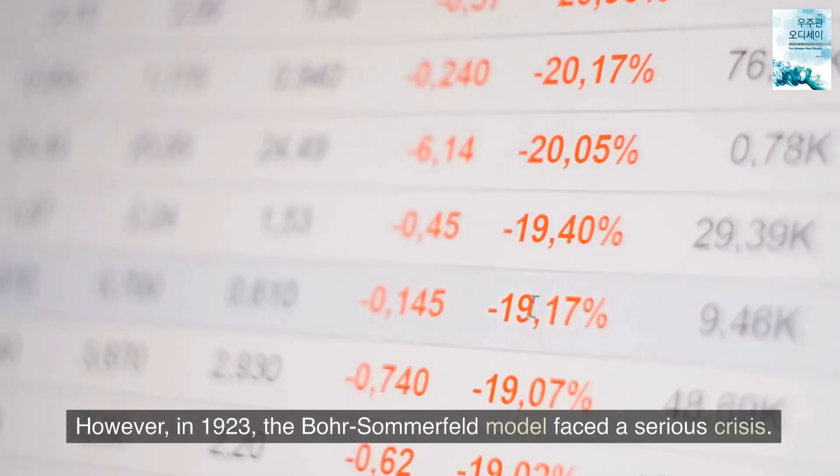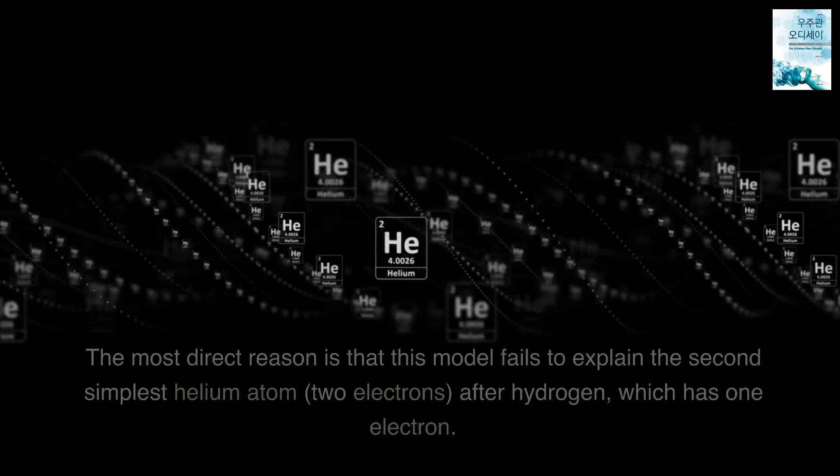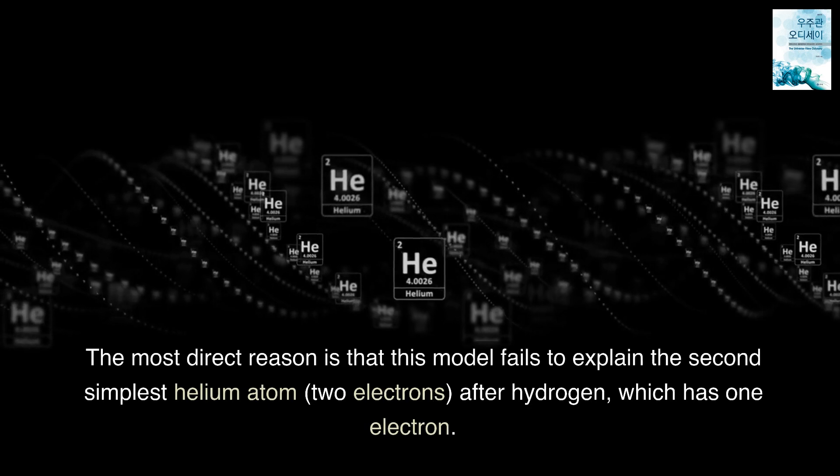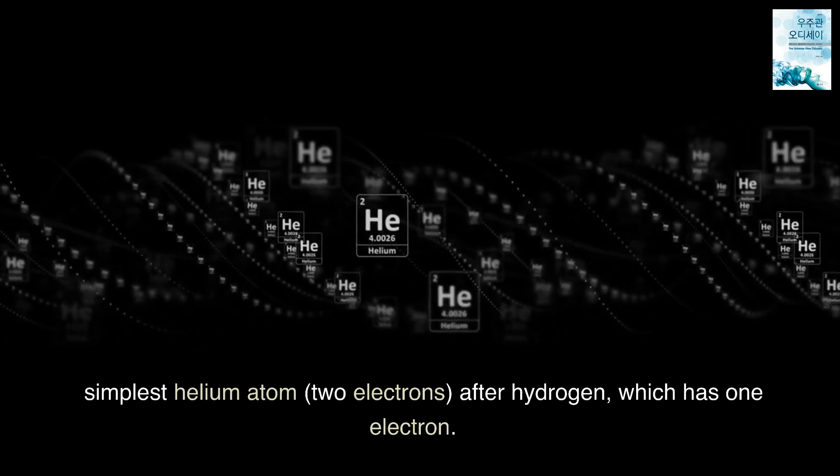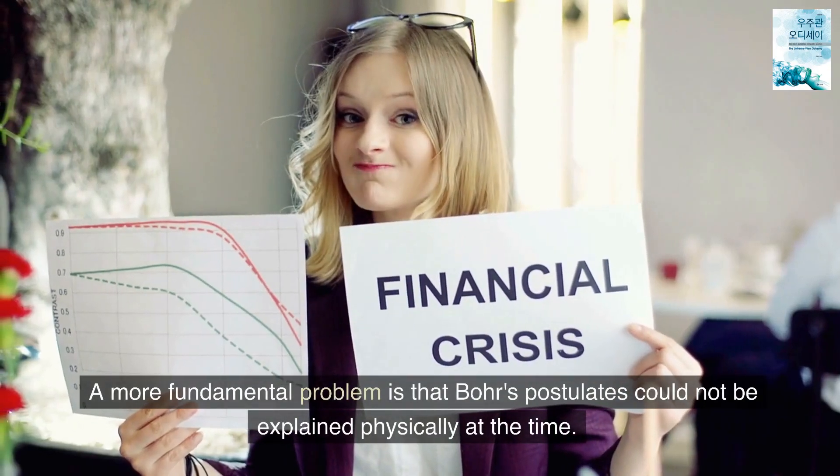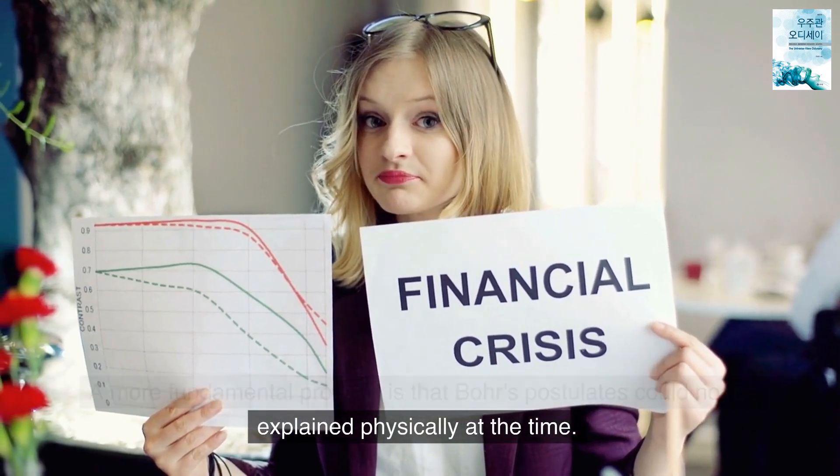However, in 1923, the Bohr-Sommerfeld model faced a serious crisis. The most direct reason is that this model fails to explain the second simplest helium atom, two electrons, after hydrogen, which has one electron. A more fundamental problem is that Bohr's postulates could not be explained physically at the time.